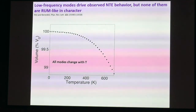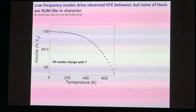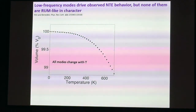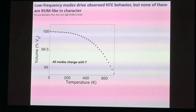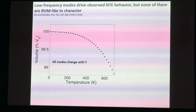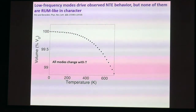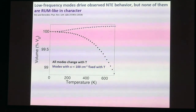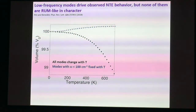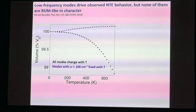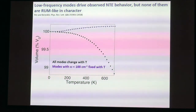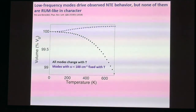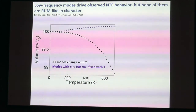In the Gruneisen density of states plots, there are many modes at low frequencies with positive Gruneisen parameters. We asked: what role do those low-frequency modes play? We performed an experiment where we forced all modes with frequencies below 100 cm⁻¹ to be perfectly harmonic—fixed their frequencies constant with temperature. When we do that, the negative thermal expansion is completely suppressed and we get positive thermal expansion instead. Conversely, allowing only modes below 100 cm⁻¹ to change with temperature while keeping higher modes harmonic still gives negative thermal expansion, but with reduced magnitude. So those low-frequency modes are very important.